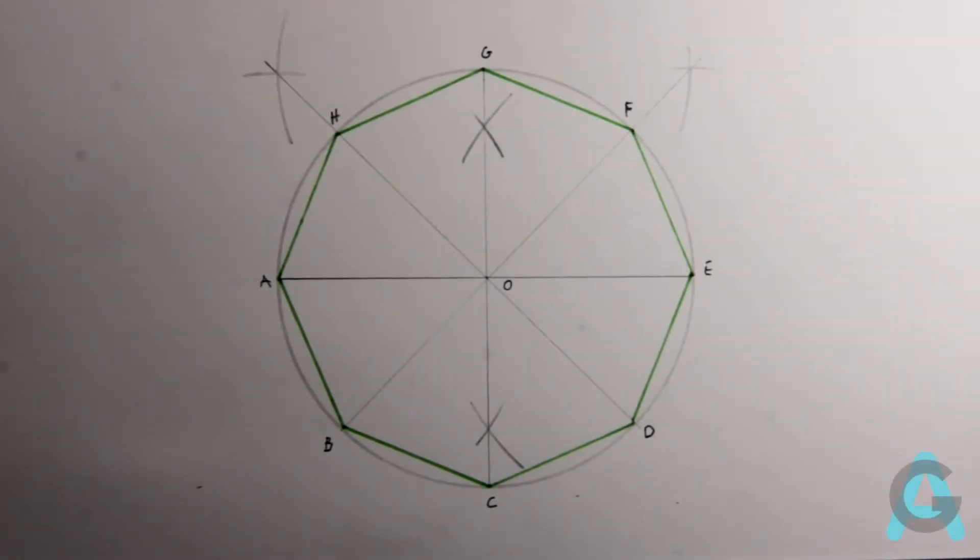Hello there! Let's draw an octagon inscribed in a circle, or the division of the circle in eight equal parts. For that, we will start to do a circle.